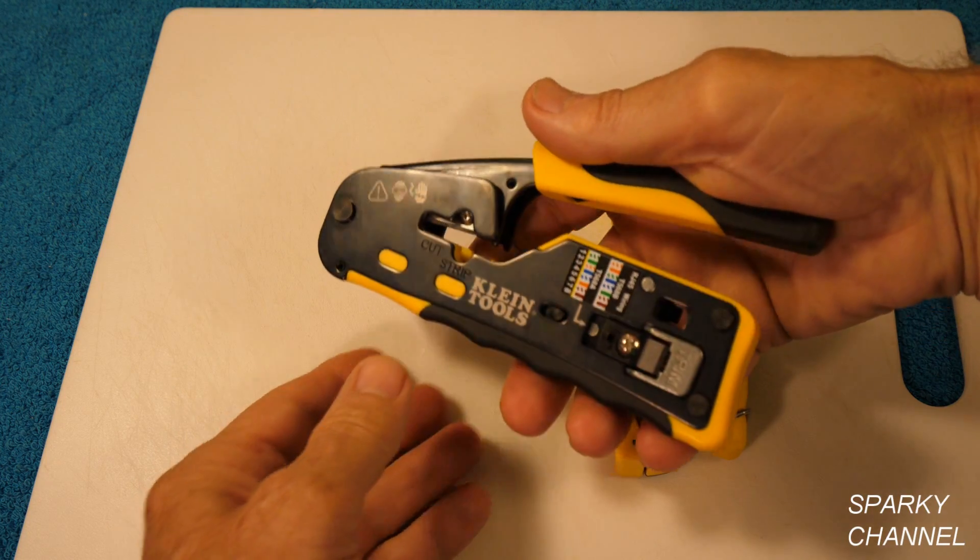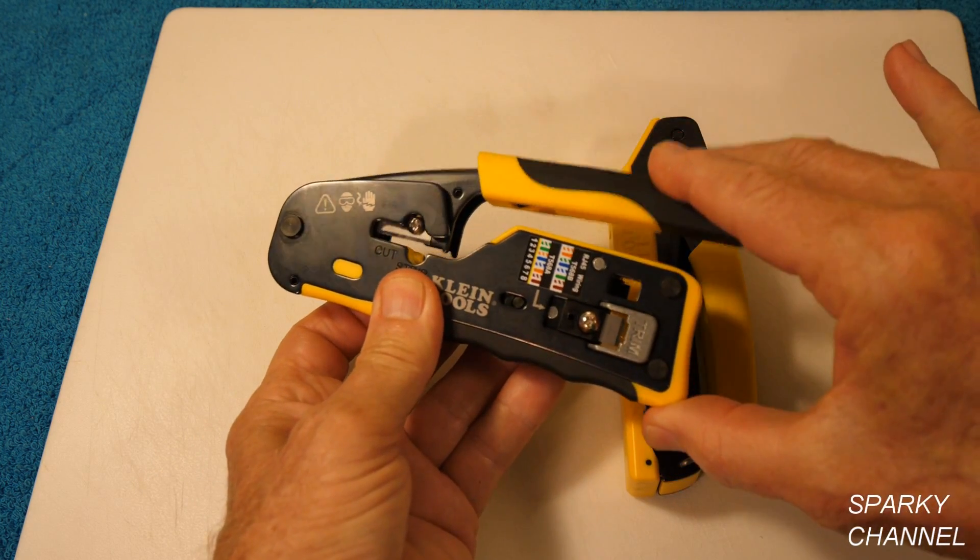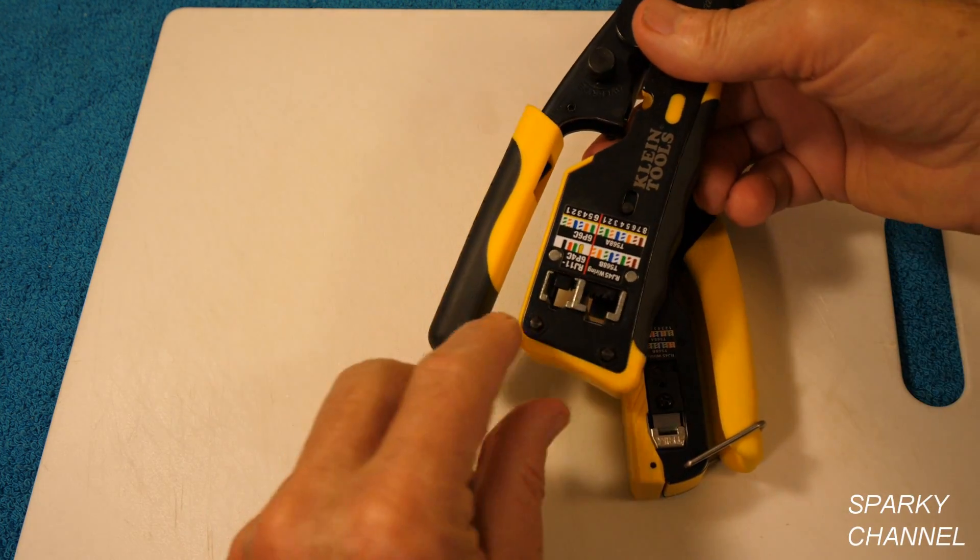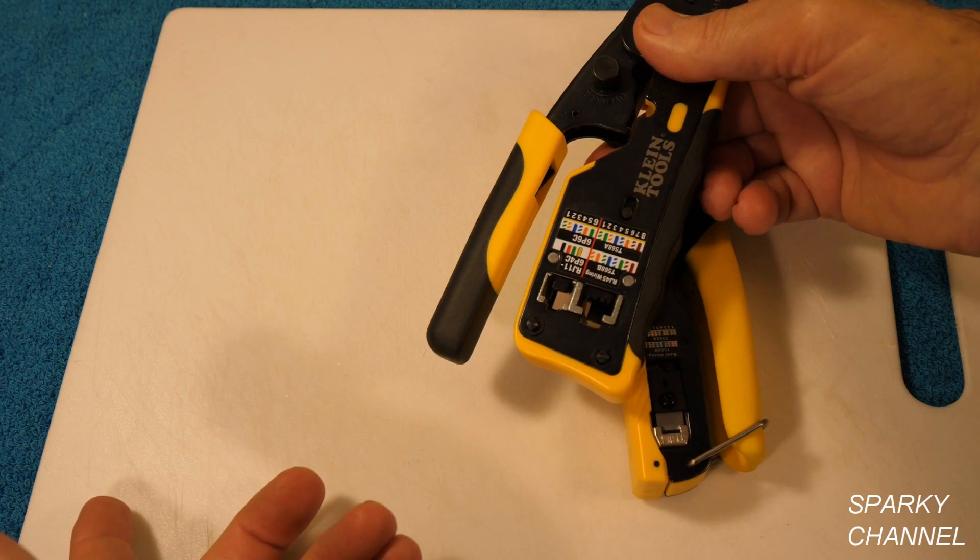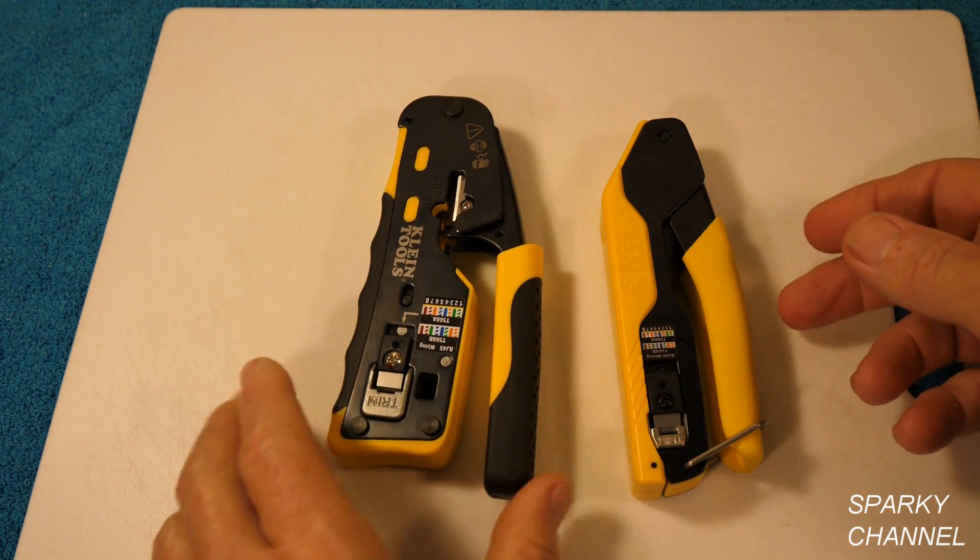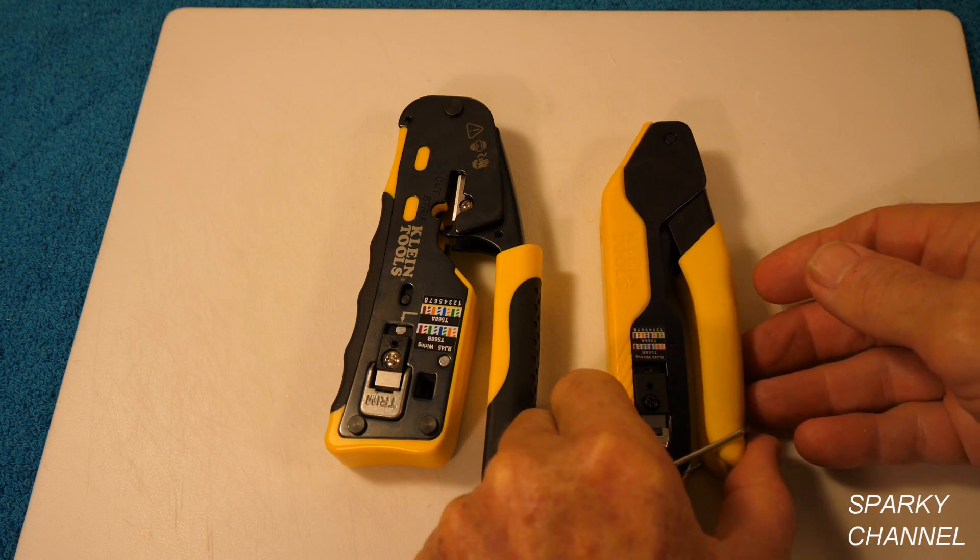The pass-through crimpers are just so much faster. That's a great technological advancement if you ask me. Then about six months ago, I made a video about this one. This is the ratcheting modular crimper. It's a very nice tool. It ratchets and it does both RJ11 and RJ45. But it's heavy. You know, that's a heavy one. Nice tool.